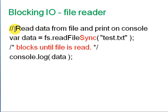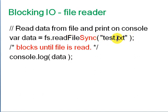For a blocking I/O file reader example: use 'var data = fs.readFileSync(filename)' — this reads the file into the 'data' variable and blocks until the file is completely read. Then 'console.log(data)' prints it to the console.